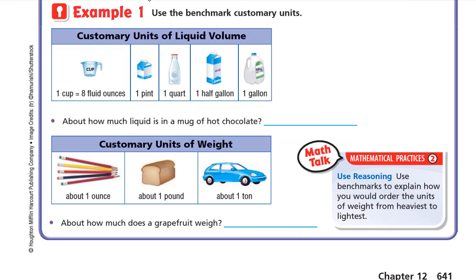Now we have the customary units of liquid volume. One cup is eight fluid ounces — it's like a cup of tea at your house. Eight ounces make one cup. Two cups make one pint, and two pints make one quart. The quart is about the size of a one-liter bottle of juice or milk you buy from the supermarket. Two quarts make one half-gallon, and two halves — or four quarts — make one gallon.